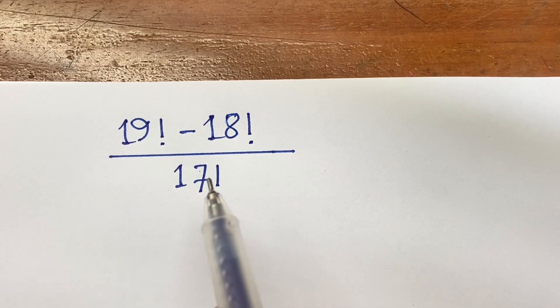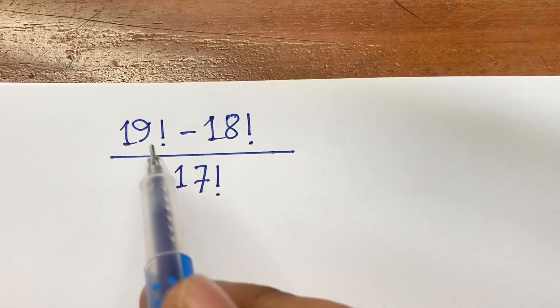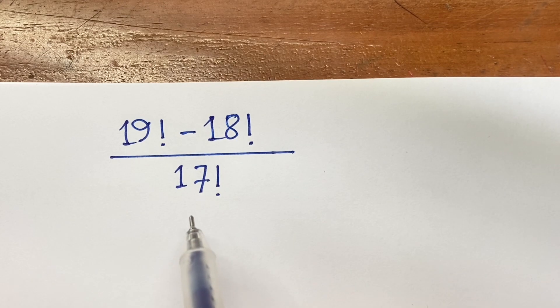Hello everyone, how to solve this question? It is a Math Olympiad question. This question is 19 factorial minus 18 factorial over 17 factorial.